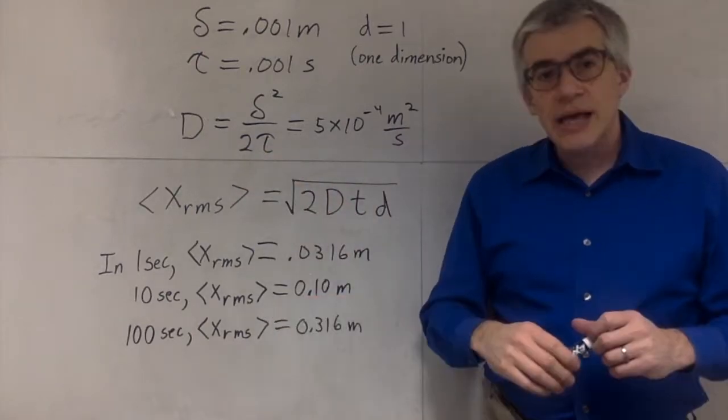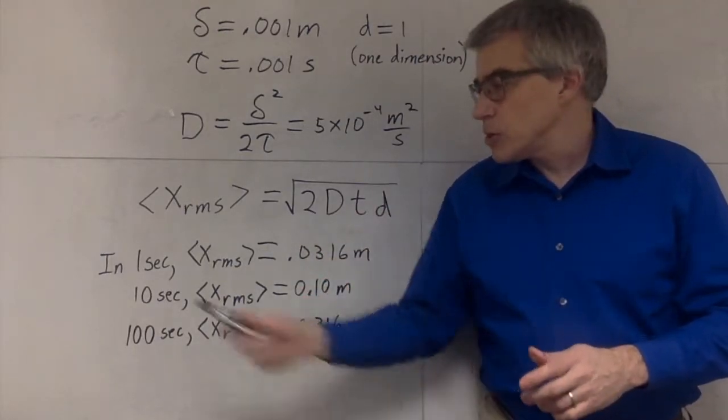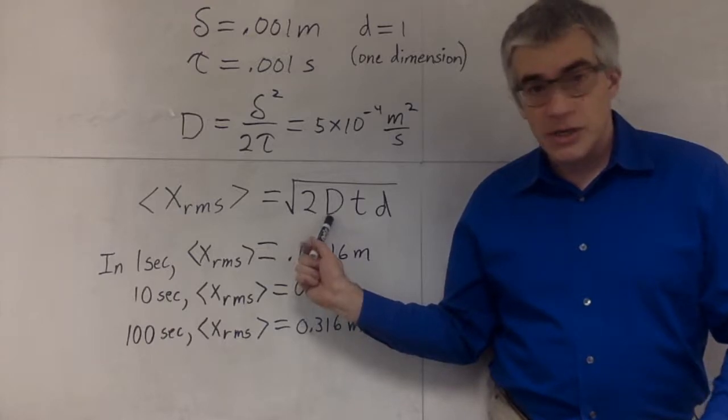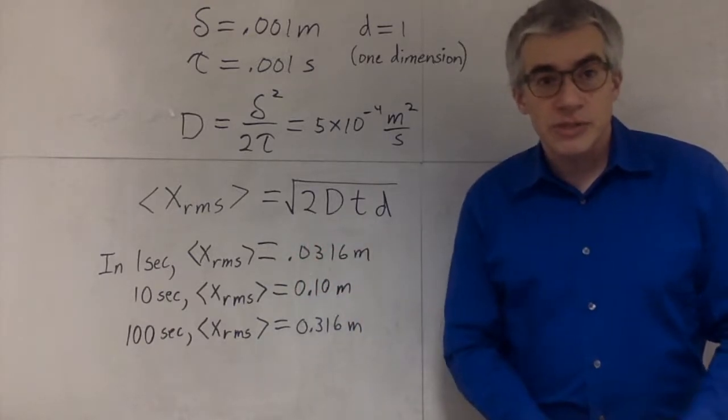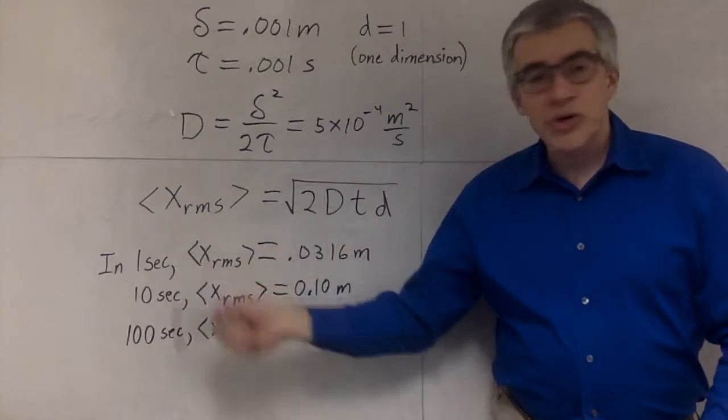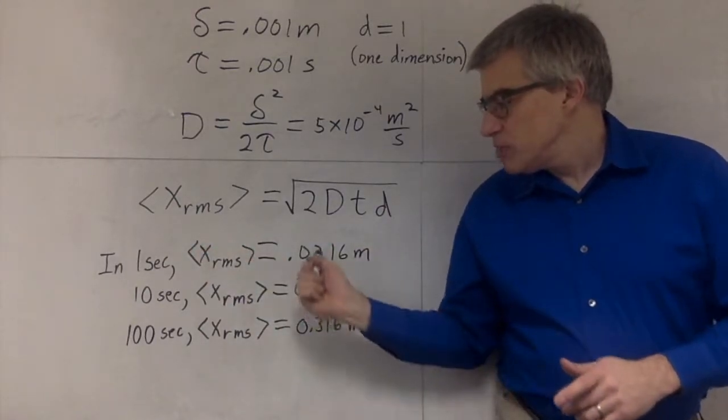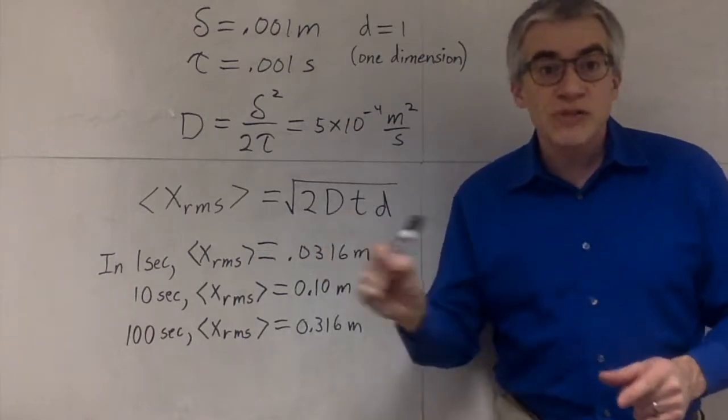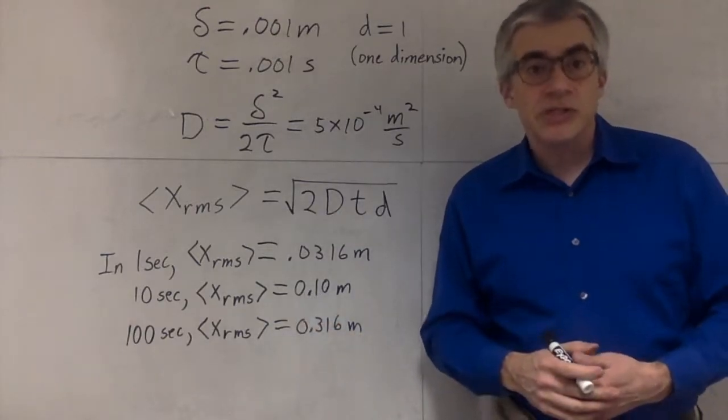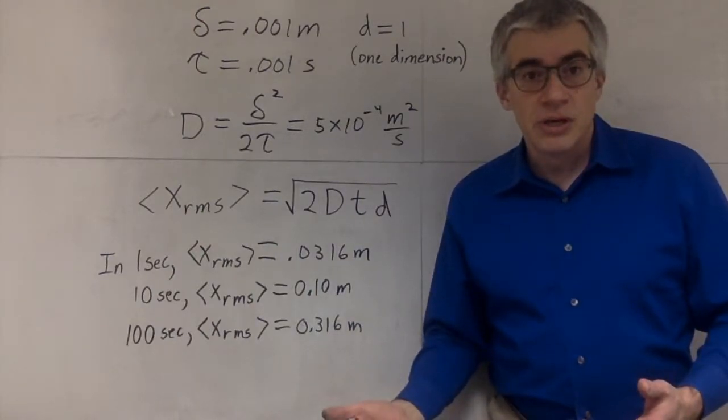That's the diffusion coefficient. After some math, some statistics behind the curtain, we find that the average distance traveled, what we call the root-mean-square distance, is the square root of 2 times the diffusion coefficient times the time times the number of dimensions. So I said one dimension, I chose the diffusion coefficient to be that, and I put in a few times. In one second, this particle could have gone one meter, but it only managed to go about 3 centimeters, because most of its motion canceled itself out. If we wait longer, if we wait 10 seconds, it turns out it'll only go 10 centimeters. If we wait 100 seconds, it will have only gone about 32 centimeters.